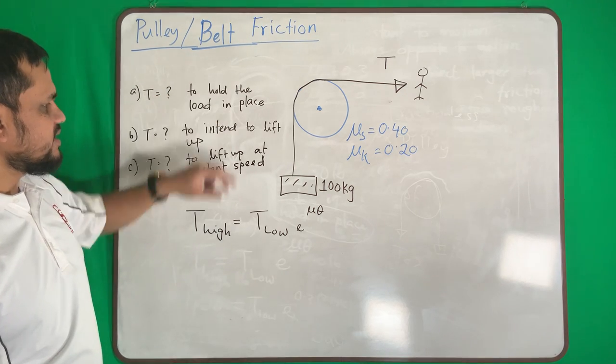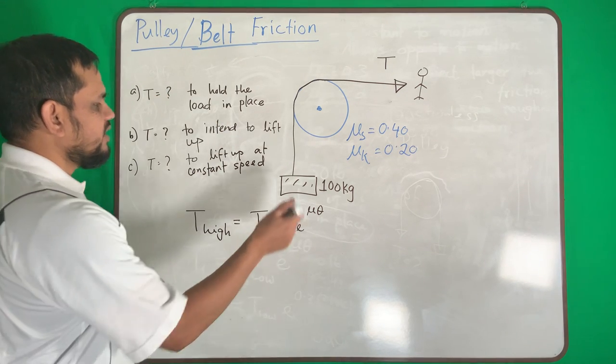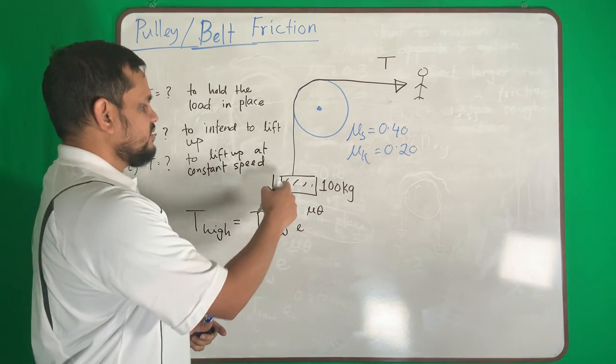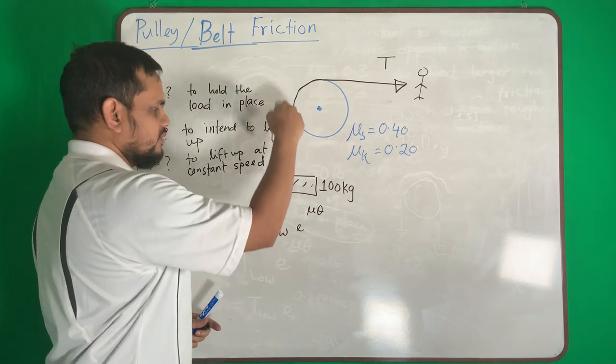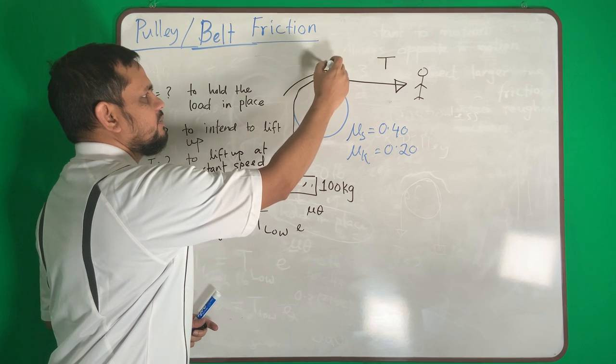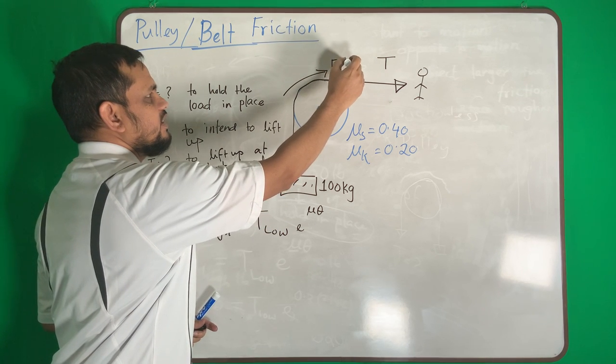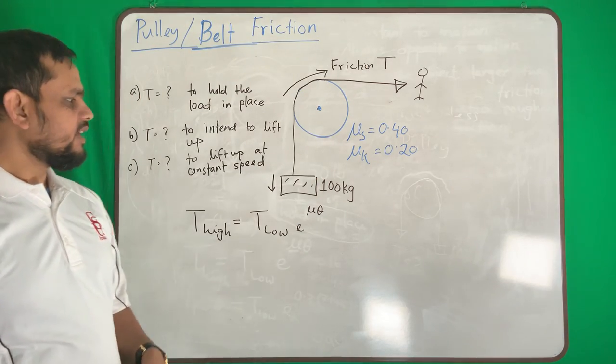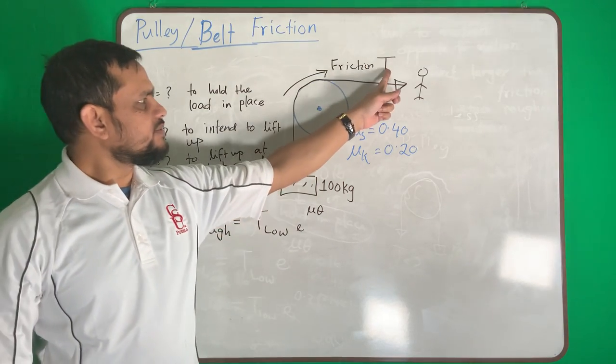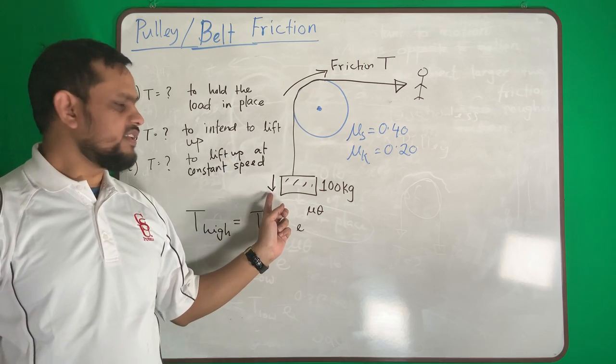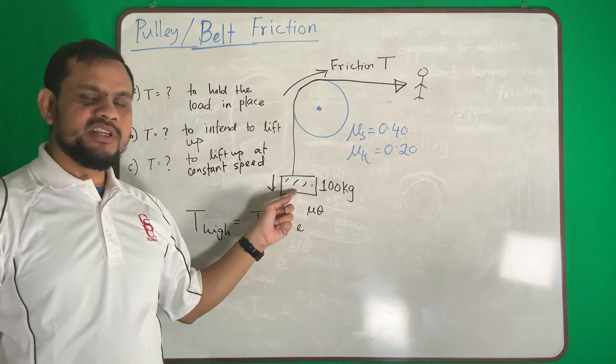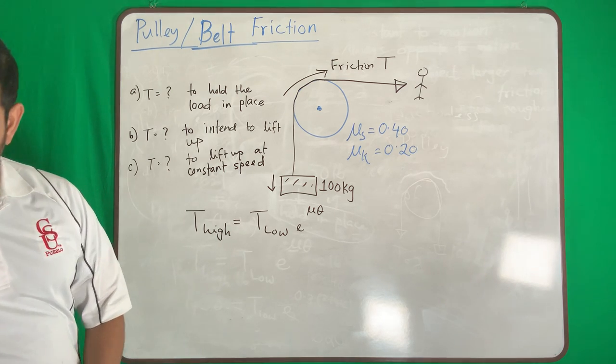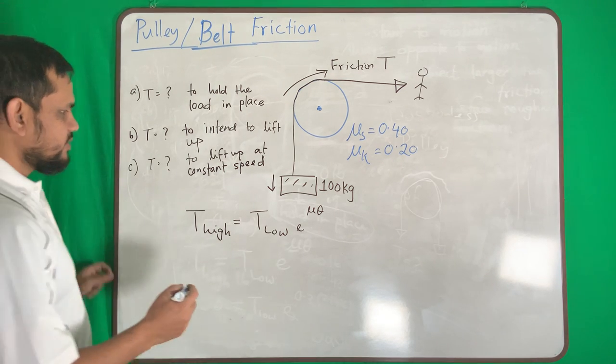First case: to hold the load in place. That means my load is going down, I have to hold it. So if my load goes this way, my frictional force goes this way. That means this plus this will be this load, so this will be higher.